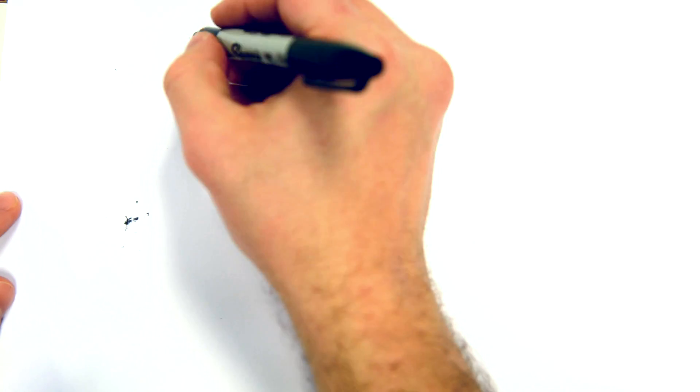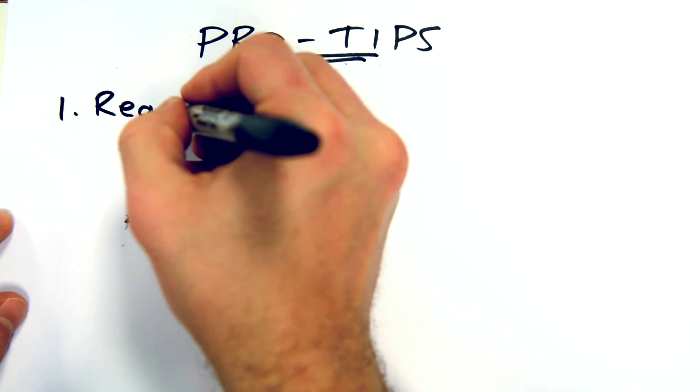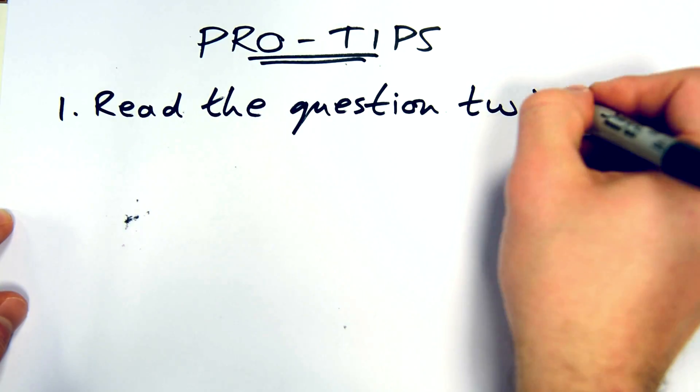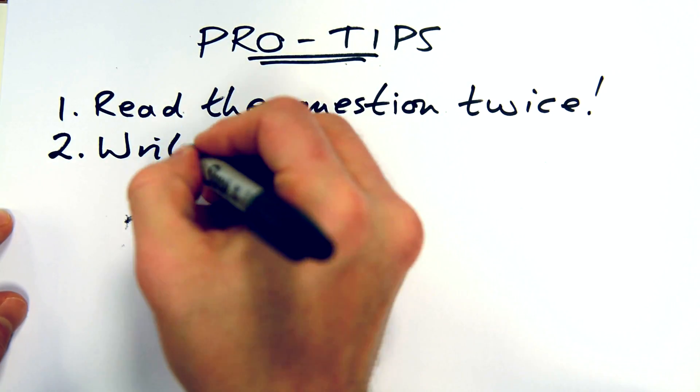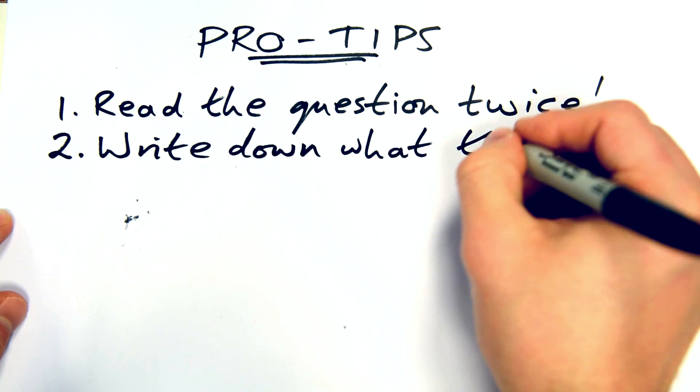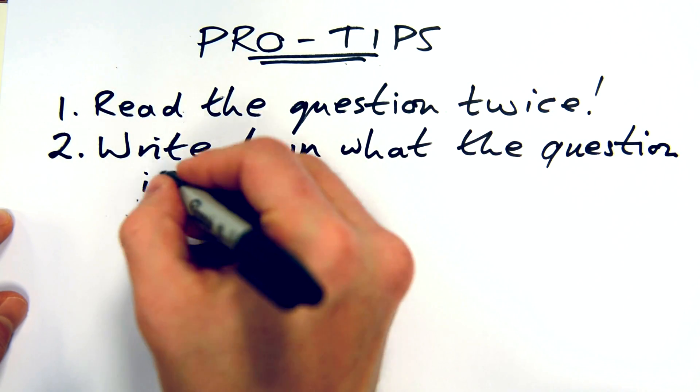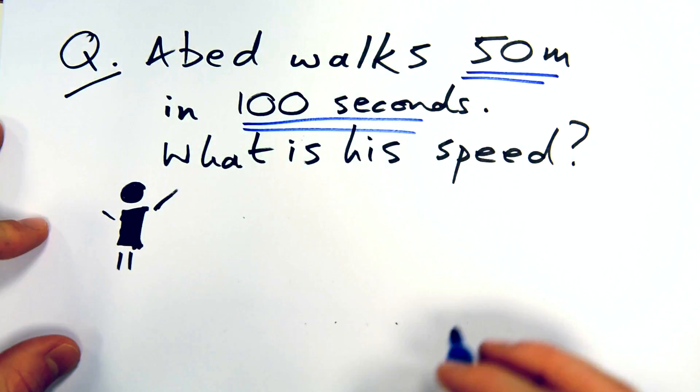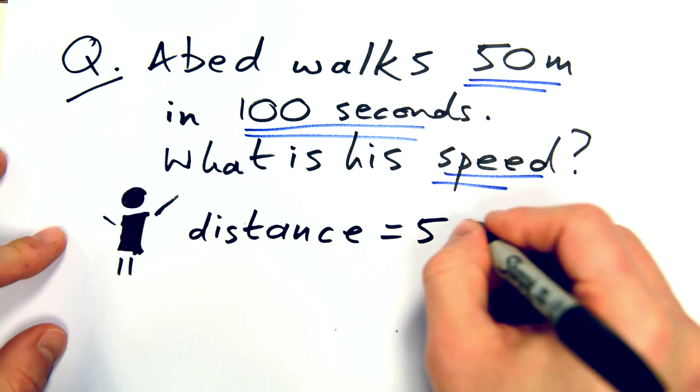So here's the first pro tip: read the question twice. It's so easy to misread a question, get the tiniest bit of info wrong and then lose out on marks. Pro tip number two: write down the important info that the question is giving you. You can even underline the important information on the question itself.